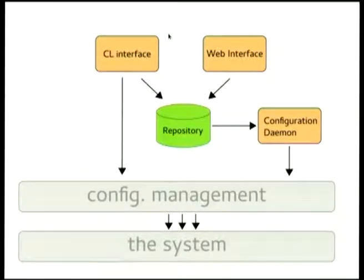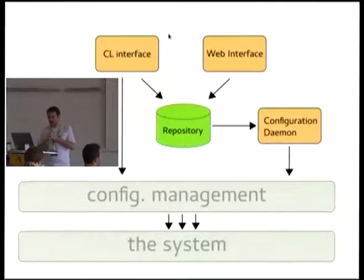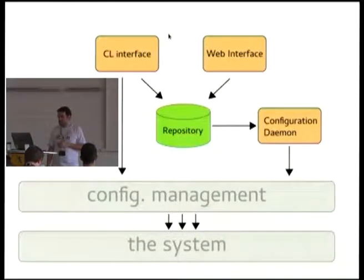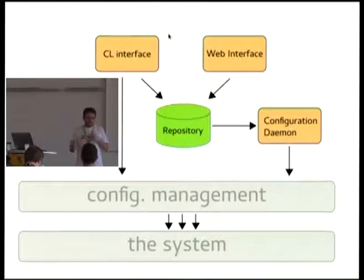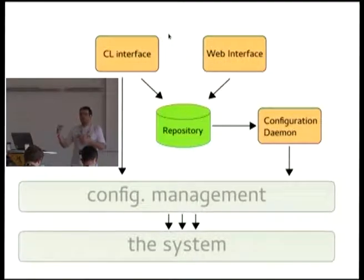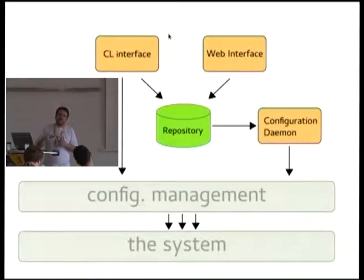The architecture has a repository of data which stores user data on applications. You can use both a command-line interface and a web interface. The CLI writes to the repository and then invokes the configuration management layer to do its thing. For the web interface, there is privilege separation: the web interface writes to the repository, and a configuration daemon listens to changes and applies them locally. You can specify access control policies — you can let some users create stuff without their changes being applied automatically, and have an administrator user who reviews the changes and accepts the configuration to be applied to the server.